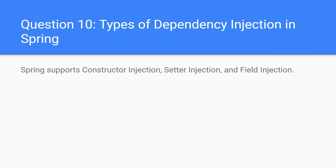Question 10: types of dependency injection in Spring. Spring supports three types: constructor injection, setter injection, and field injection.